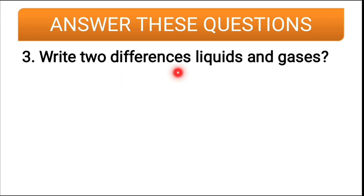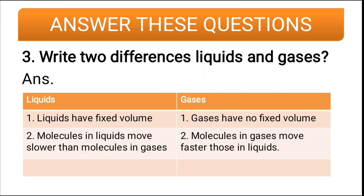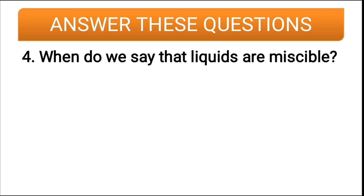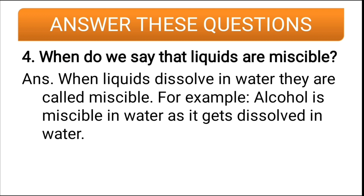Third long answer: write two differences between liquids and gases. Liquids have a fixed volume whereas gases have no fixed volume. Molecules in liquid move slower than molecules in gases, whereas molecules in gases move faster than those in liquids. Fourth: when do we say that liquids are miscible? Miscible means they get dissolved. When a liquid dissolves in water, it is called miscible — for example, alcohol is miscible in water because it dissolves in water.